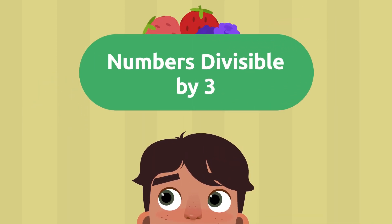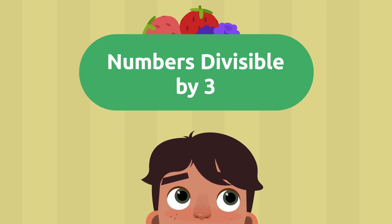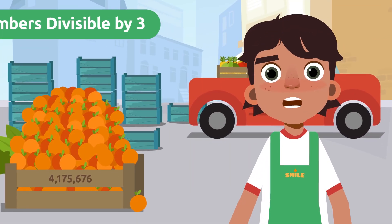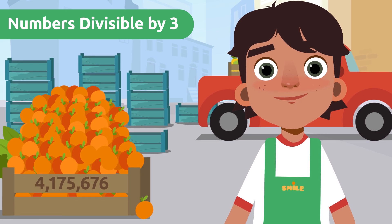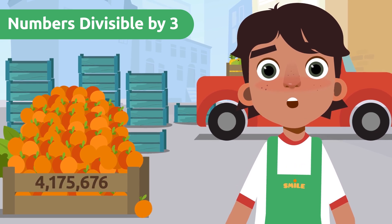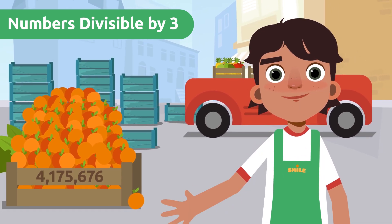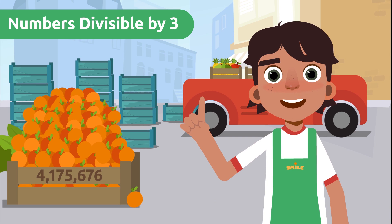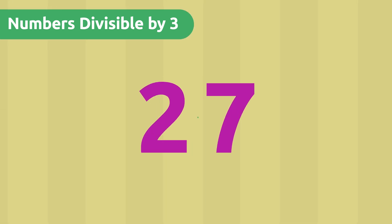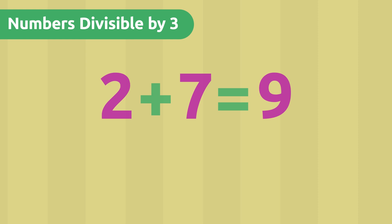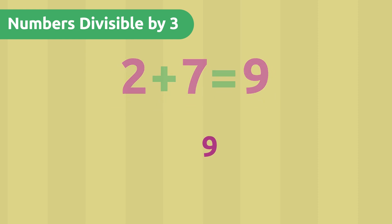Numbers divisible by three. I want to put three oranges in each box. To find out if a number can be divided by three, there's a neat trick. We have to add up all the digits, and if the result is divisible by three, then the original number is too.